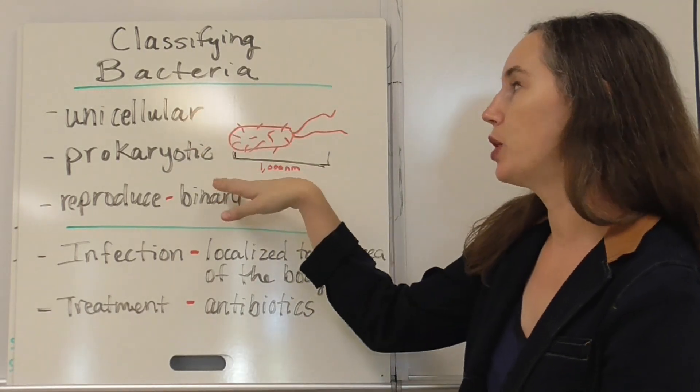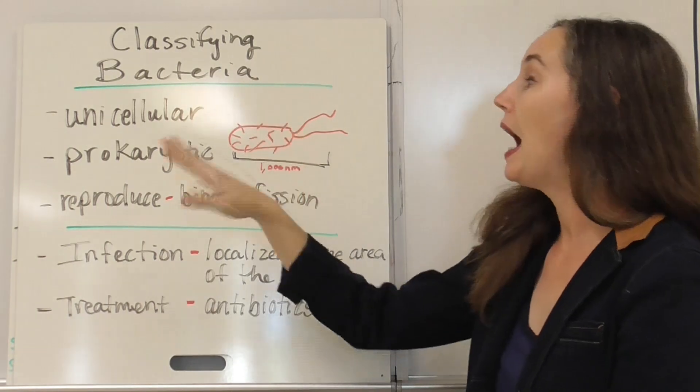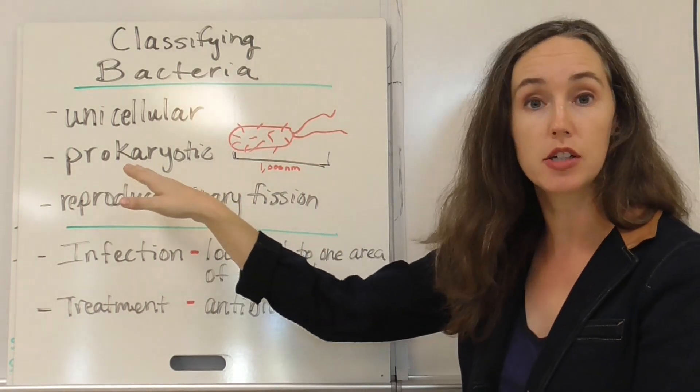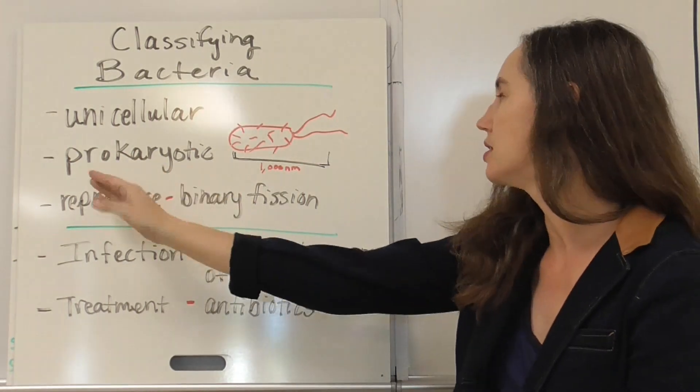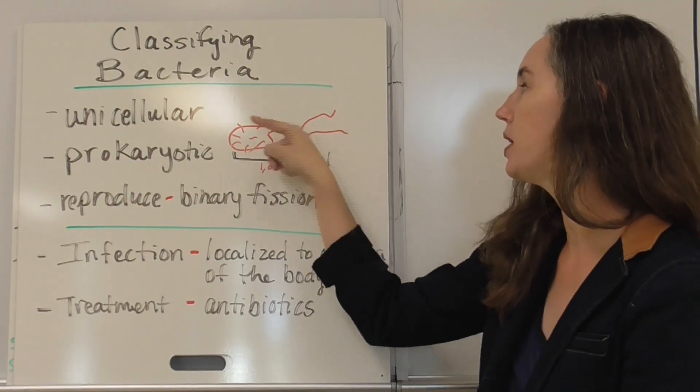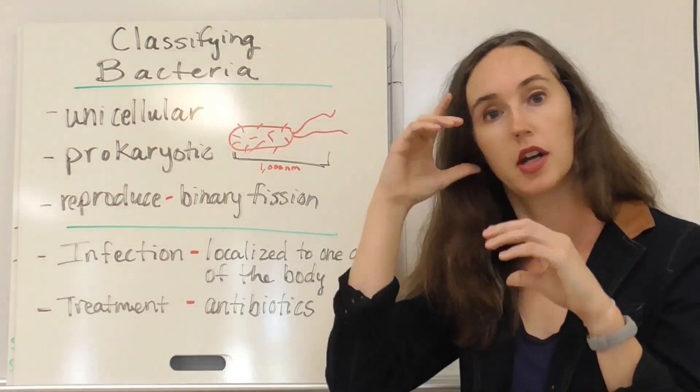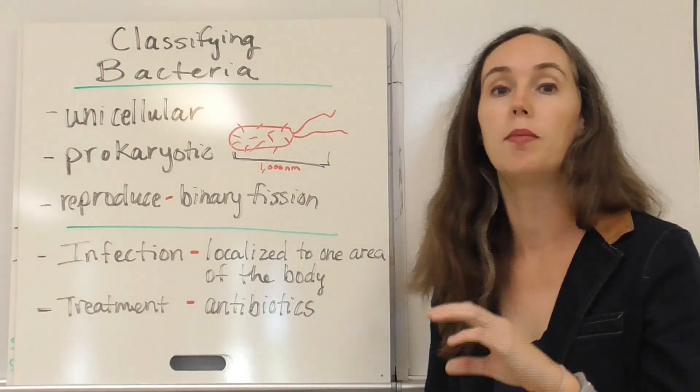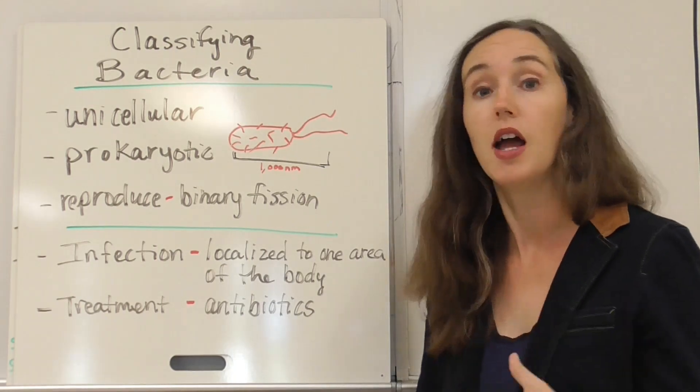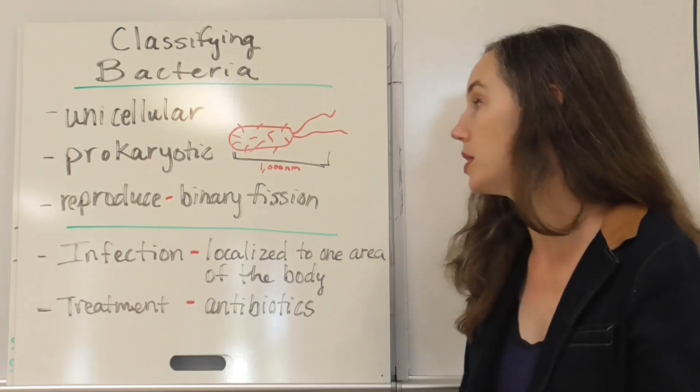Bacteria are unicellular prokaryotes, meaning that they're only made up of one cell, and that this cell does not have a nucleus or any membrane-bound organelles. Here's an example of one here with some flagella and pili sticking off of the cell wall that coats the bacteria. Bacteria are coated in a molecule called peptidoglycan, and some have more and some have less, and we'll look more into that later as we go into classification.